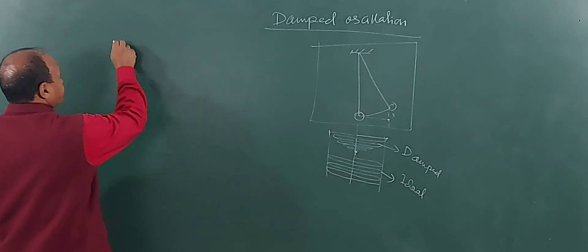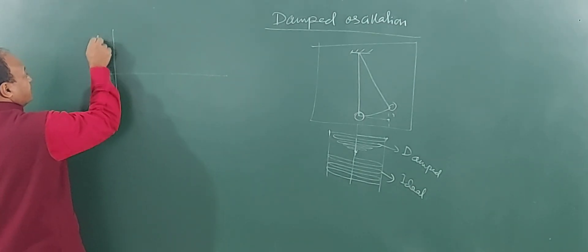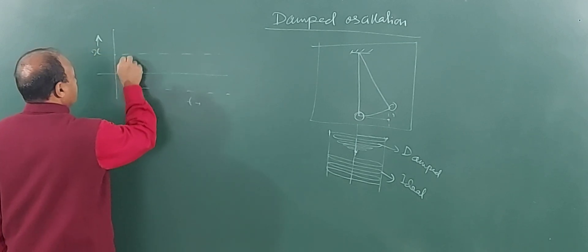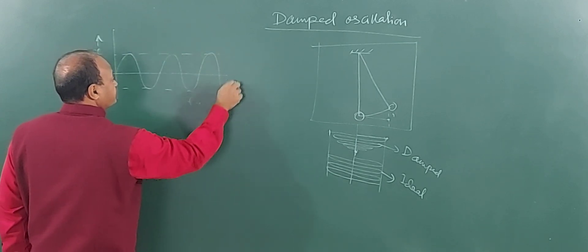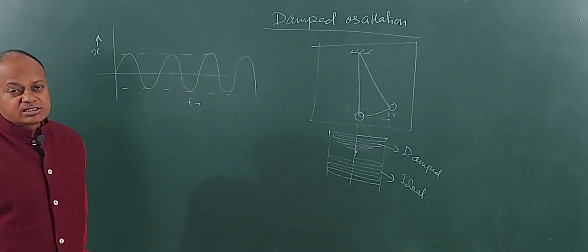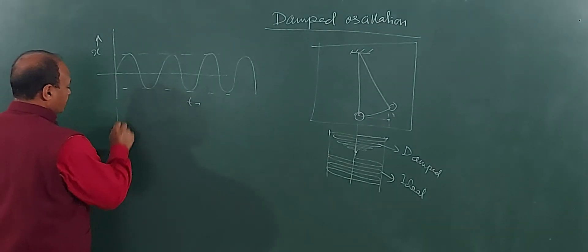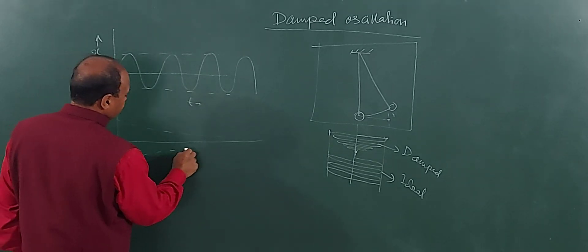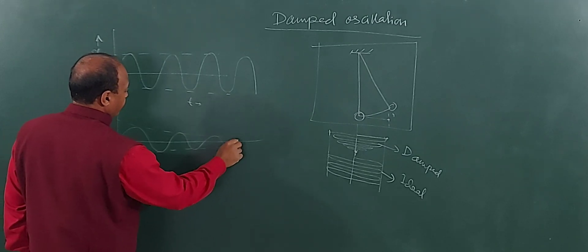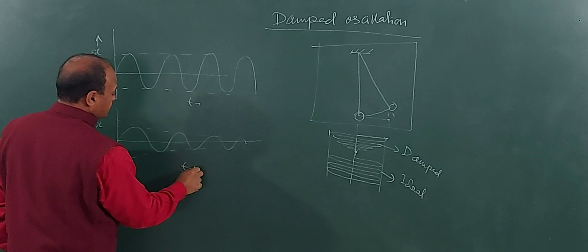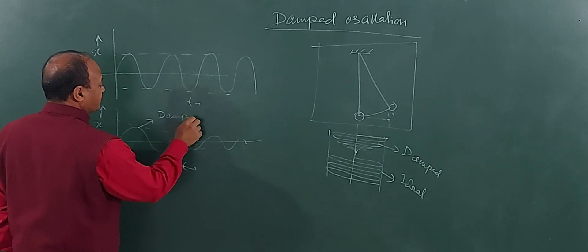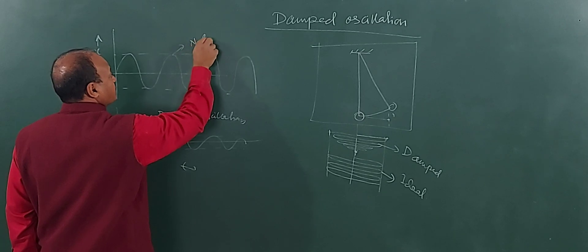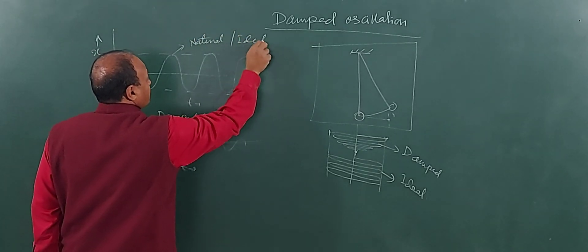If I plot the displacement on the Cartesian plane — this is displacement and this is time — and if the oscillations come like this, then these are natural or ideal oscillations. On the other hand, if you find oscillations having a gradually decreasing amplitude like this, this is the displacement-time graph for damped oscillations, and these are natural or ideal oscillations.